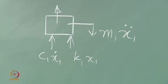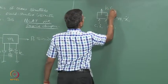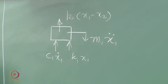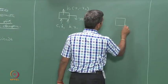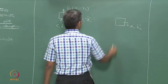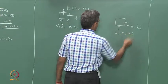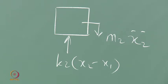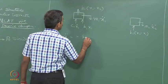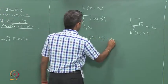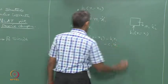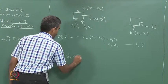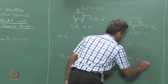When you pull the primary mass, the restoring force applies in the opposite direction, giving K2(X1 − X2). For the second mass, the equation is M2 Ẍ2 = −K2(X2 − X1). Using the same concept for writing relative displacement, the first equation of motion is: M1Ẍ1 = −K2(X1 − X2) − K1X1 − C1Ẋ1. The second equation of motion is: M2Ẍ2 = −K2(X2 − X1).